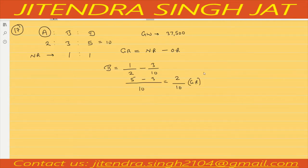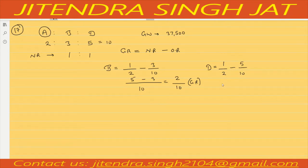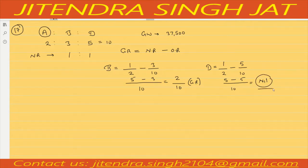Let's calculate for D, Deepak. The new share of Deepak is 1/2. The old share of Deepak is 5/10. Taking LCM: 5 minus 5 equals nil. This means neither sacrifice nor gain. So only Bimal is gaining 2/10.